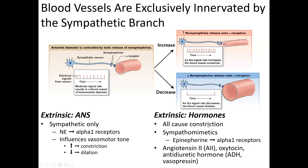Hormones all cause vasoconstriction — none cause dilation. The primary ones are sympathomimetics: epinephrine and norepinephrine. Other important vasoconstrictors include angiotensin II ('angio' = vessel, 'tensin' = tension), and oxytocin and antidiuretic hormone, both from the posterior pituitary, also play a role in extrinsic hormonal control of TPR.